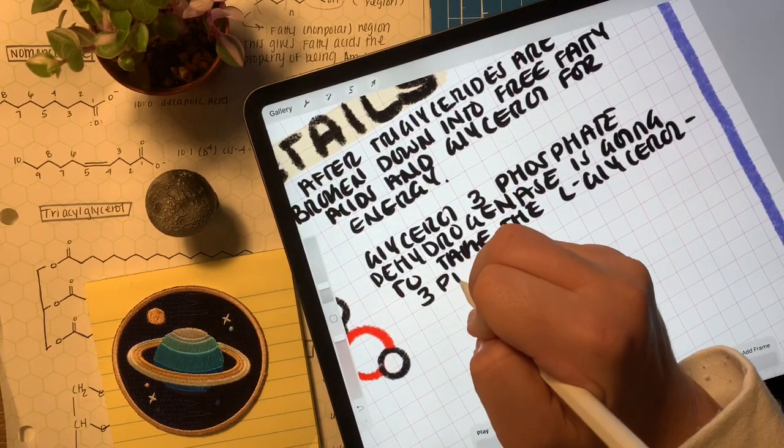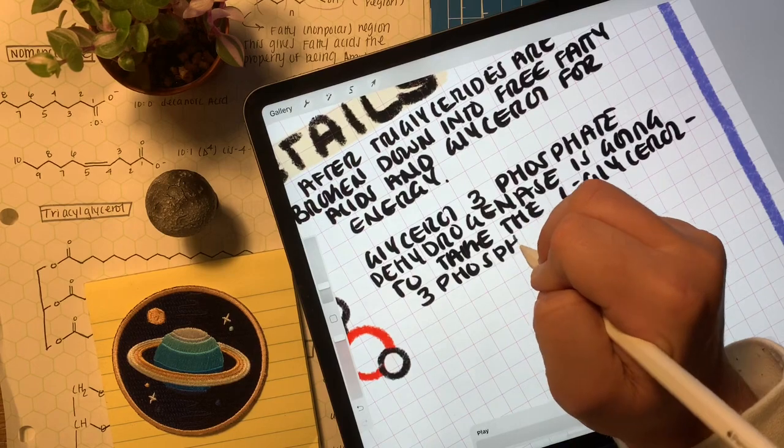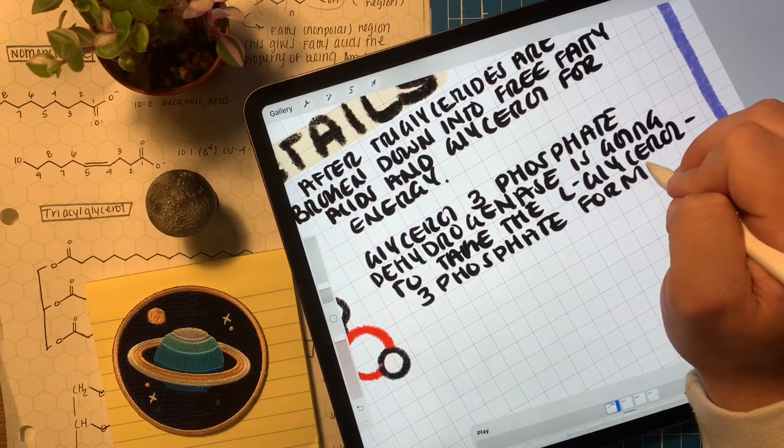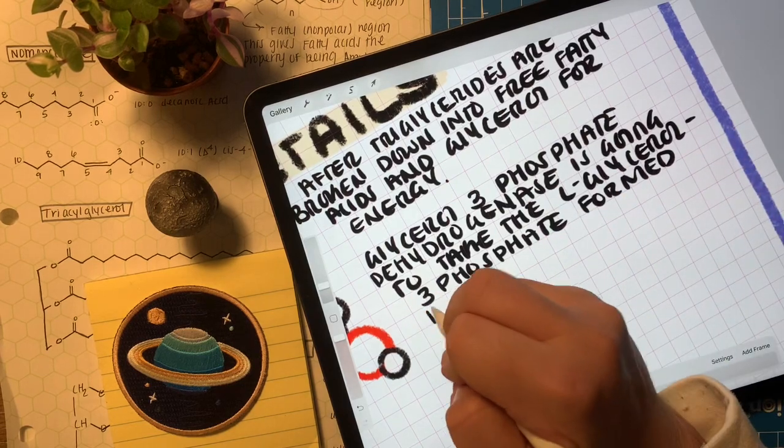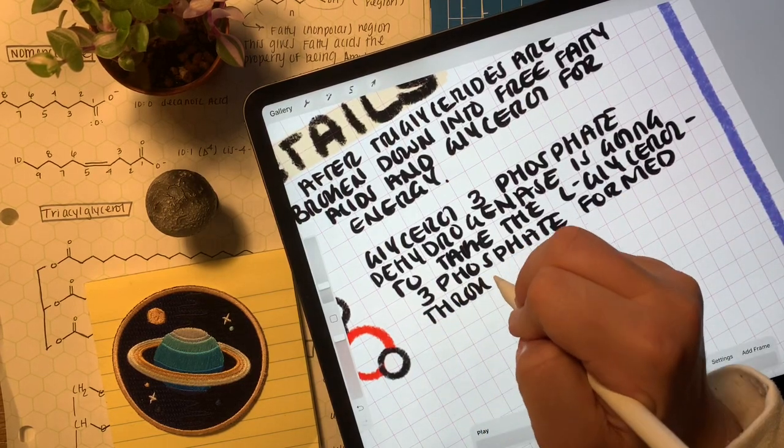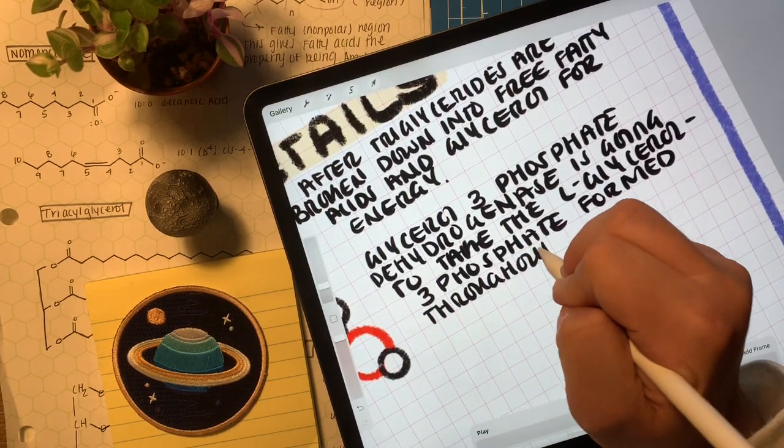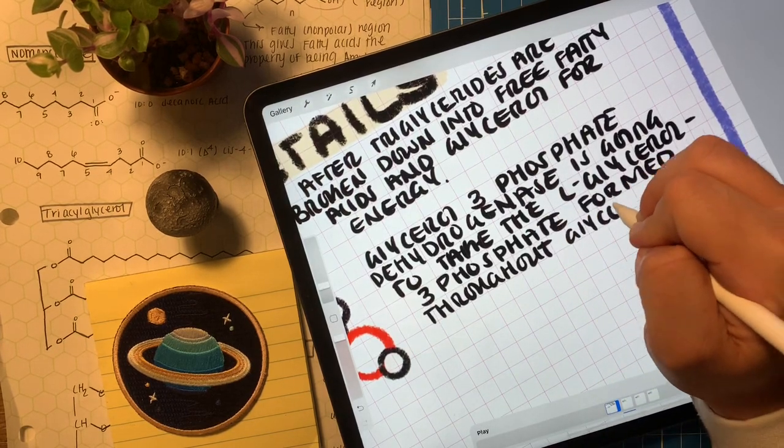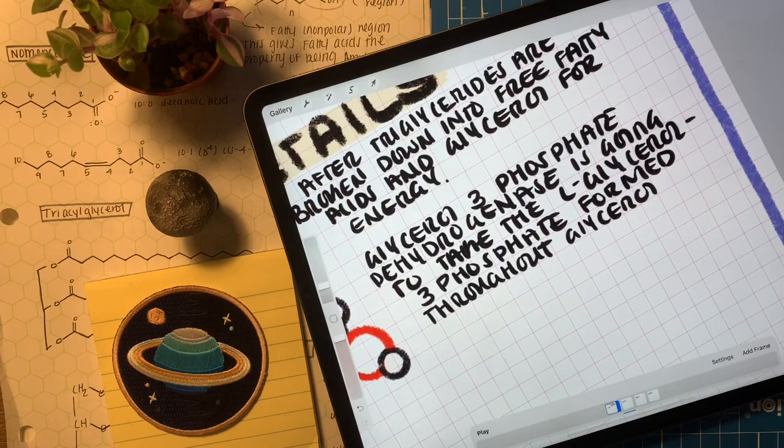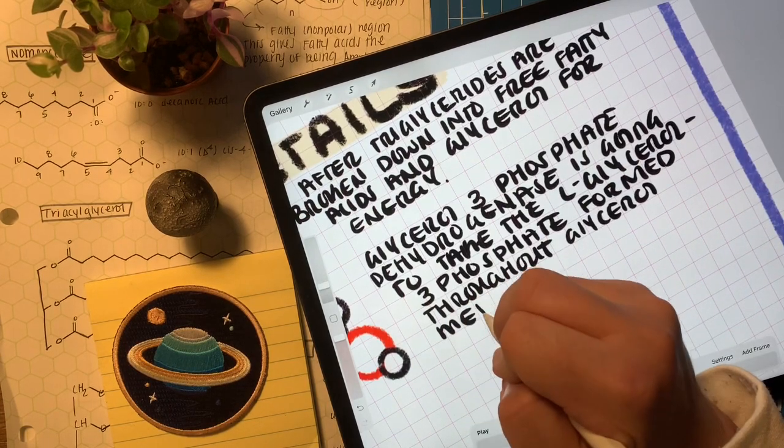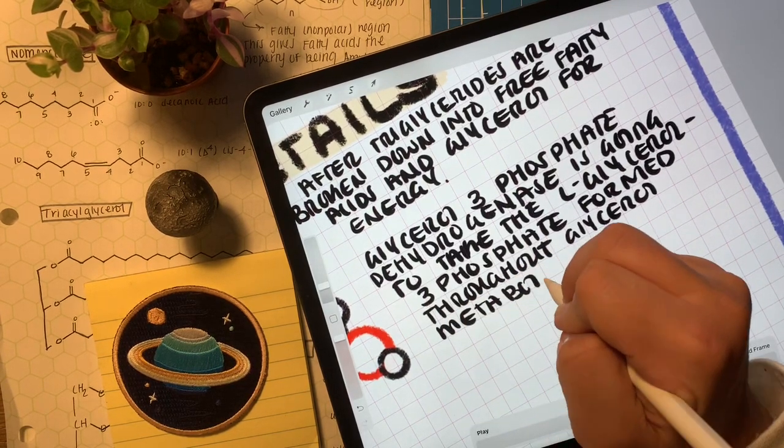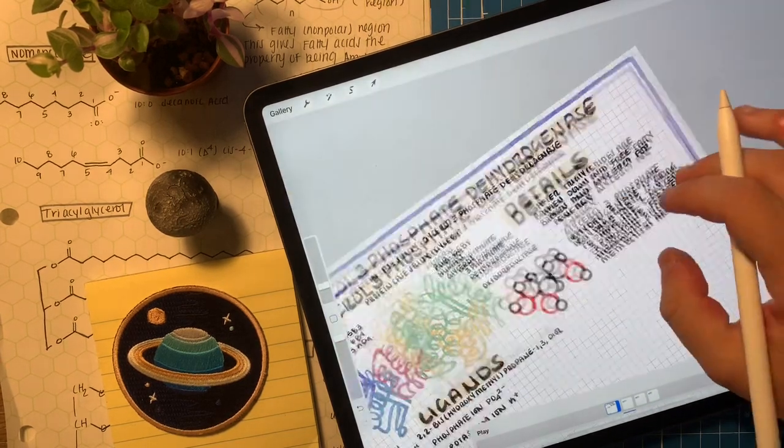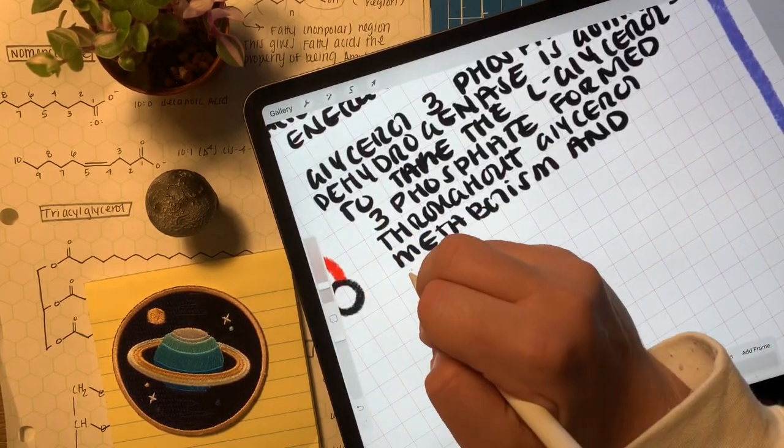I was getting ready to jump straight into fatty acid oxidation and talk about the pathway, but then I realized that one of my key things I'm trying to do is build a community where we can learn biochemistry, organic chemistry, and other sciences together. I thought if I was going to go into fatty acid oxidation, I should take a few steps back and talk about lipids, triglycerides, and things that build up or feed into fatty acid oxidation metabolism so we can get a bigger picture about what's going on.